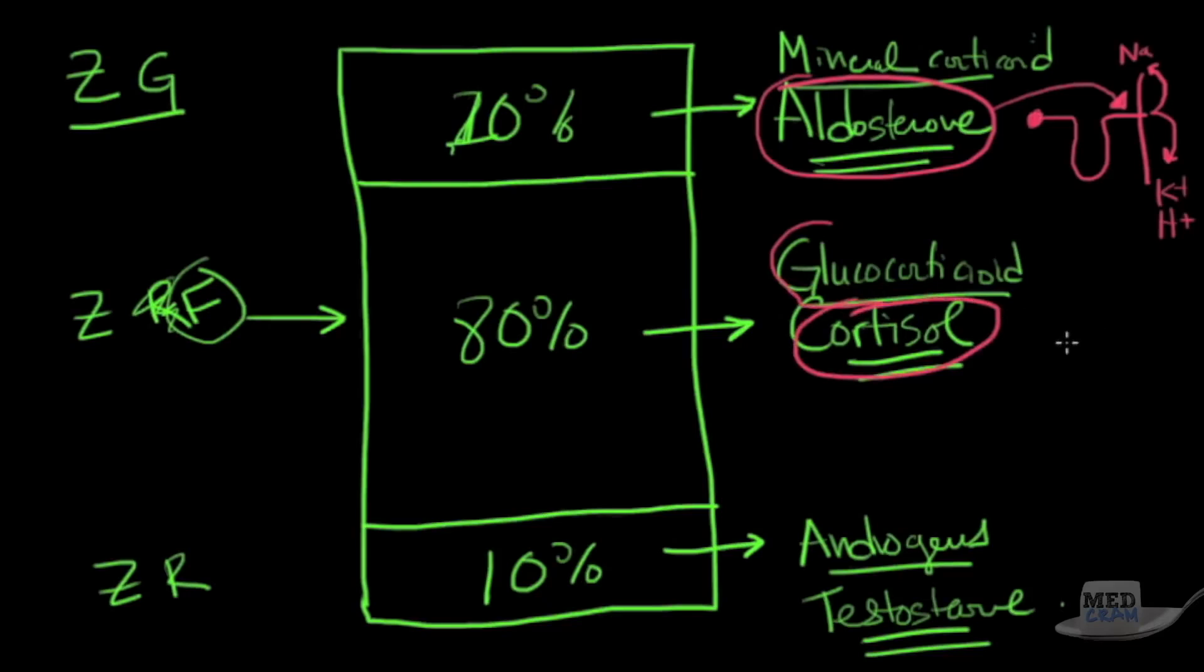What does glucocorticoids or cortisol do? Cortisol basically is a hormone that signals to the body that we need to increase glucose. Without cortisol, you would be dead. You need to have cortisol. One of the primary functions is to increase glucose in the body, and it can do that through gluconeogenesis or glycogenolysis.